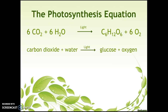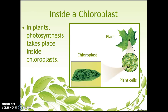Our chemical equation is: 6CO₂ + 6H₂O with light energy gives us C₆H₁₂O₆ + 6O₂. The word equation is: carbon dioxide plus water with the help of light energy gives us glucose and oxygen. All of these line up — CO₂ is the same thing as carbon dioxide, H₂O is the same thing as water, C₆H₁₂O₆ is the same thing as glucose, and O₂ is the same thing as oxygen.